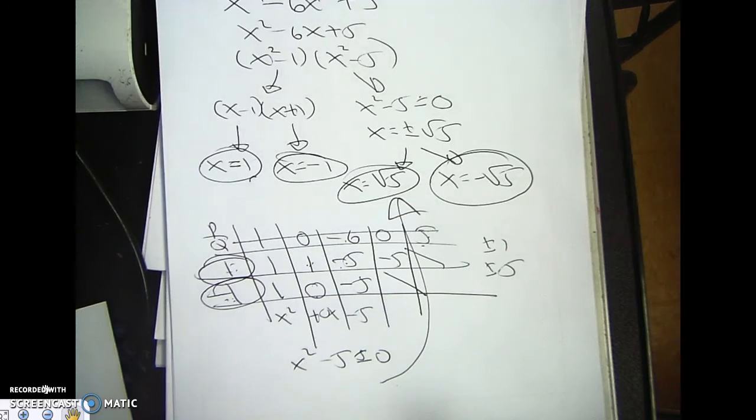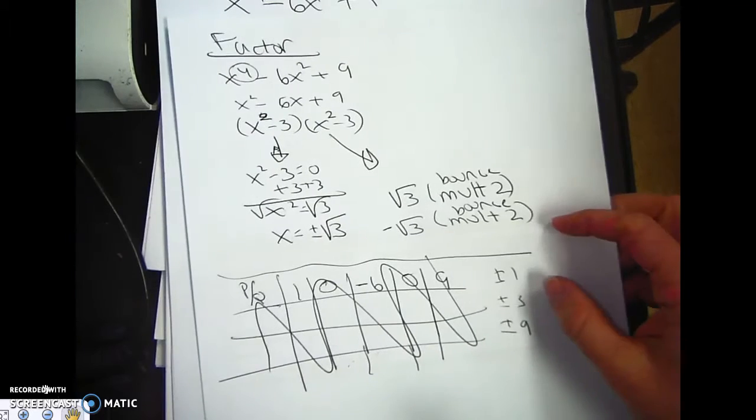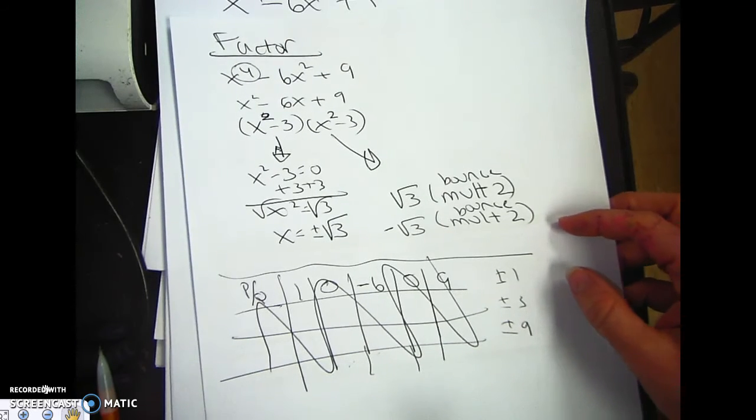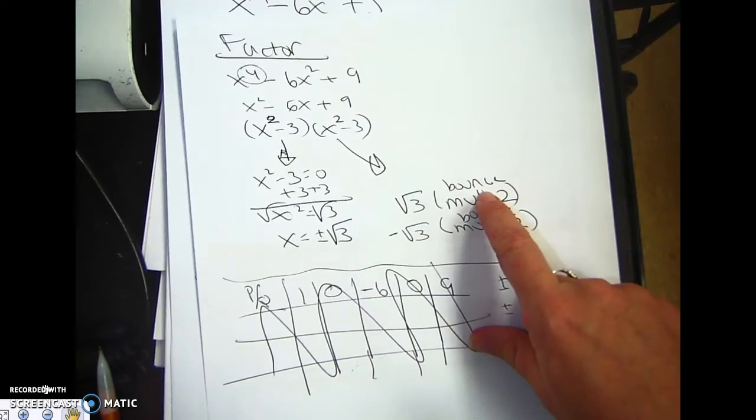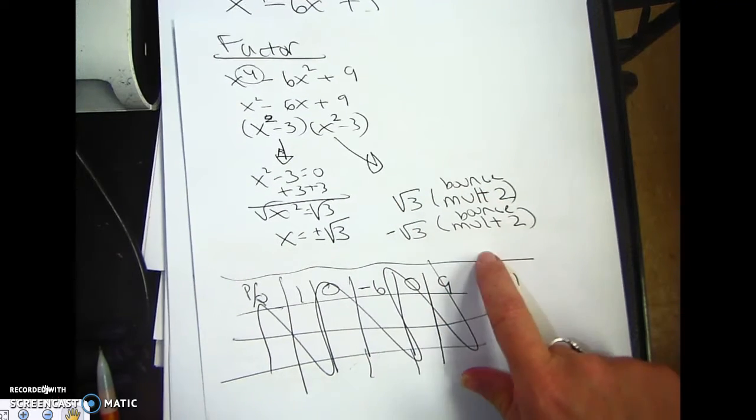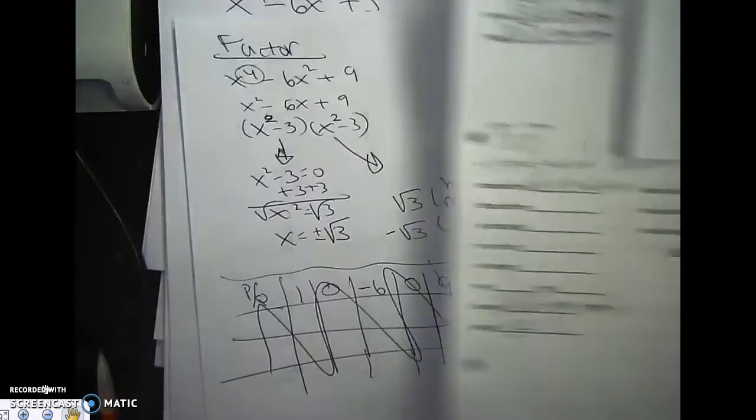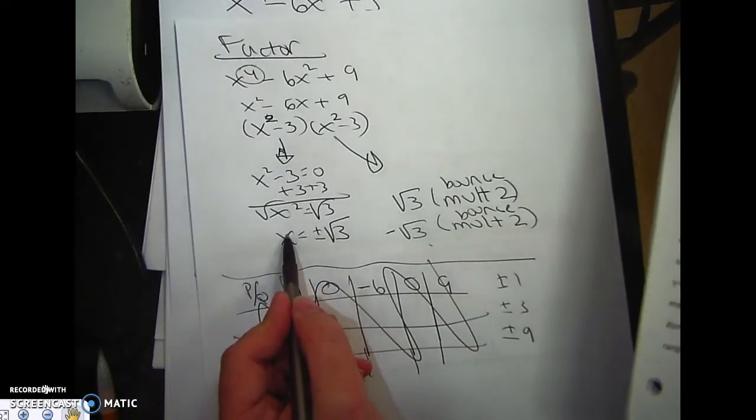So just be careful. This is why it's really advantageous to know how to factor. Now that I know that the answers are plus rad 3 multiplicity 2 and negative rad 3 multiplicity 2, I need to write that answer in factored form.